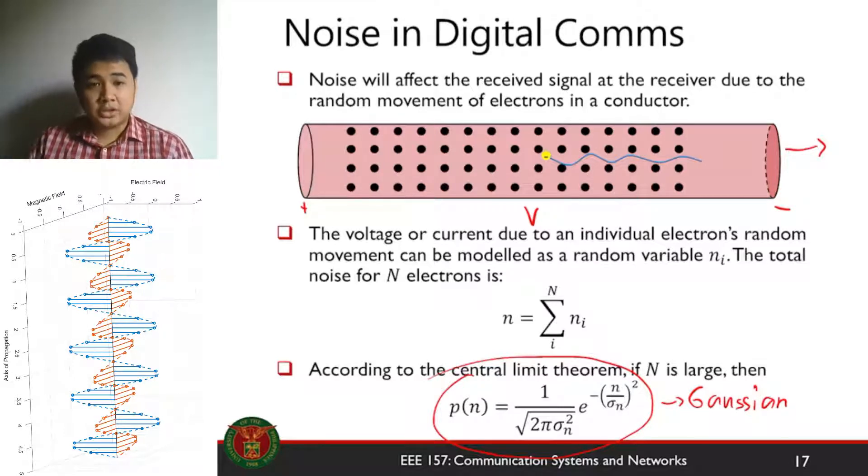Since there are a lot of electrons in a system, if we add any distribution to each other a lot of times, the probability distribution function of that random variable, the resulting random variable will become Gaussian, normally distributed. It will become normally distributed and we'll have a PDF with this expression right here. An important parameter of this PDF is sigma n which is the standard deviation or rather sigma n squared which is the variance.